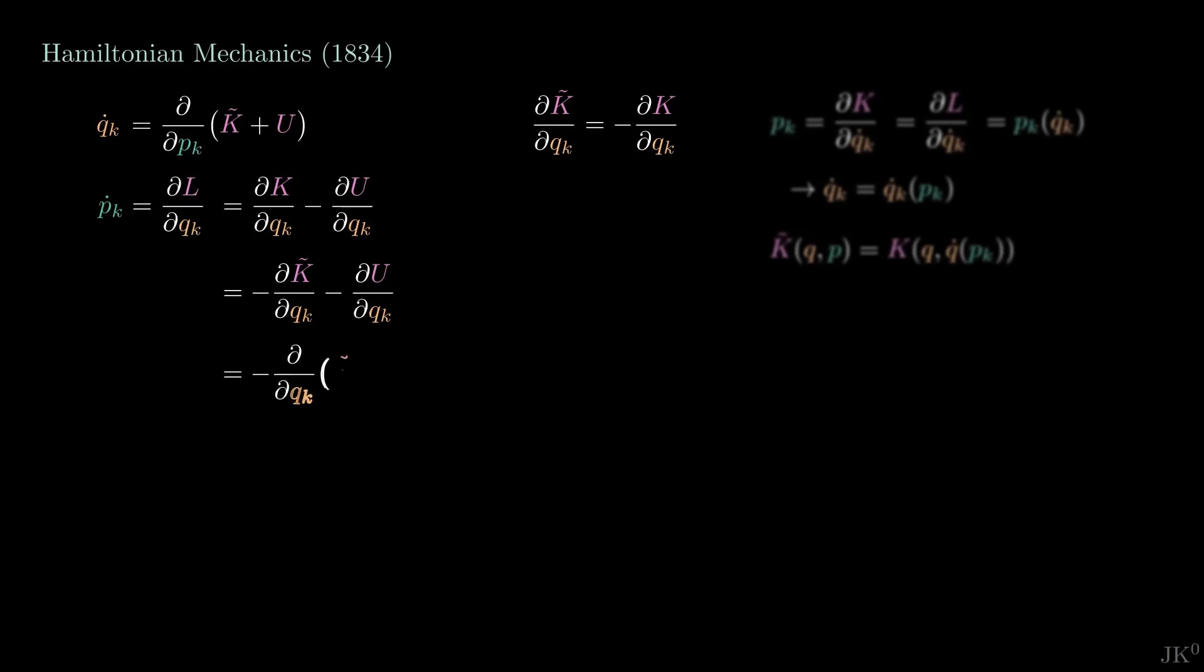Here Hamilton finally introduces the function H to denote the sum of kinetic and potential energy written in terms of q and p. With this, the equation of motion for the canonical momentum becomes this. Using this definition for H, we can also update the equation for q.